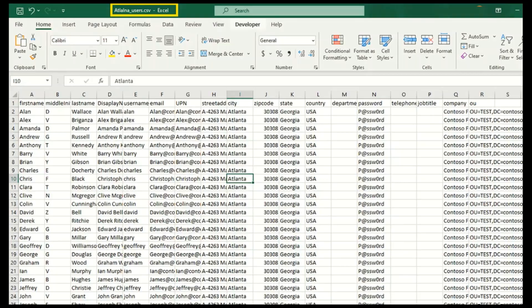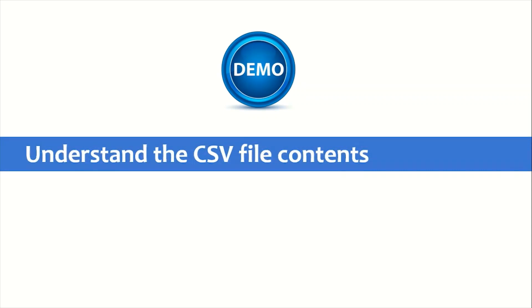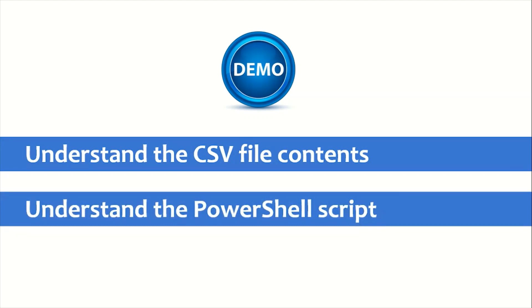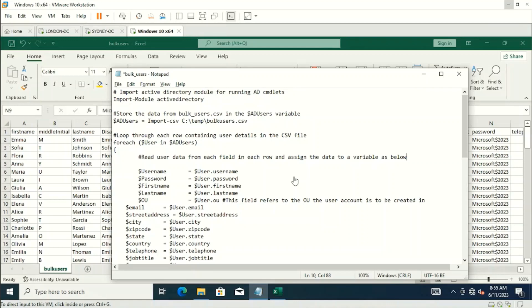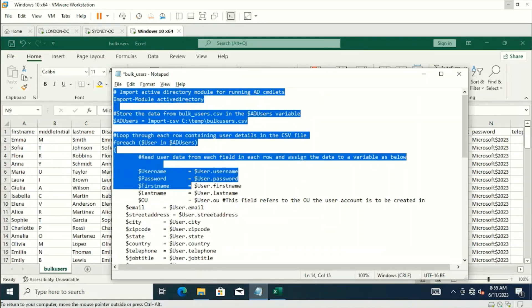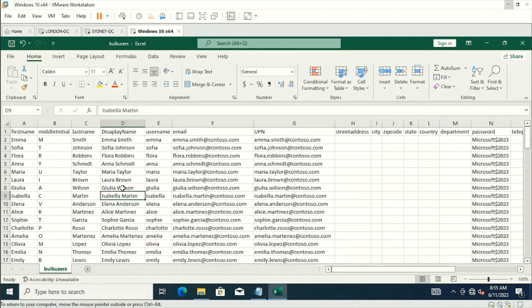Let's jump into the demos. We'll understand the contents of the CSV file, understand the PowerShell script, and see how the script reads the contents of the CSV file. Then we'll run the script to create users in bulk in Active Directory. Welcome to the labs — here is the PowerShell script and here is the .CSV input file.